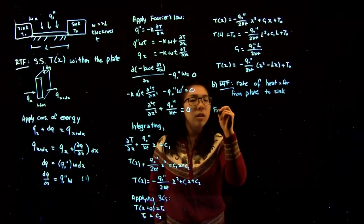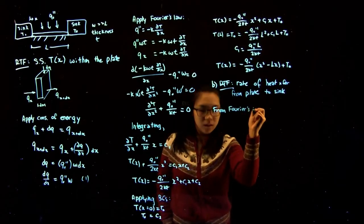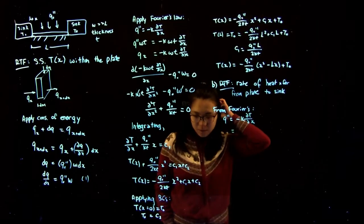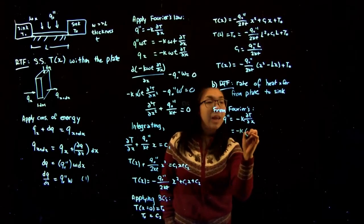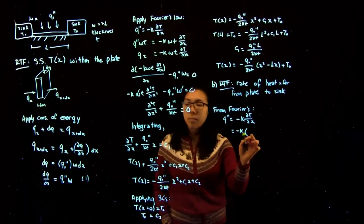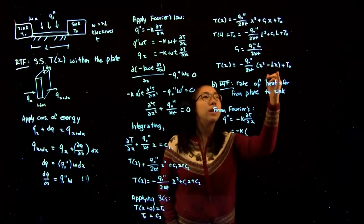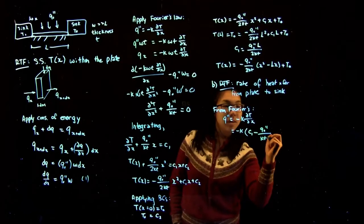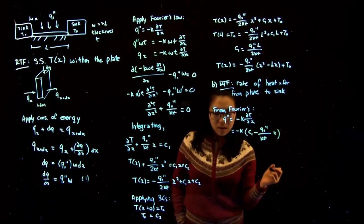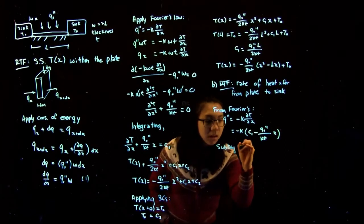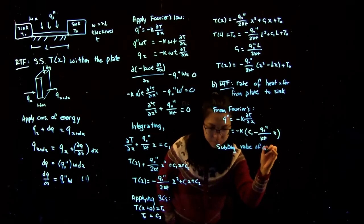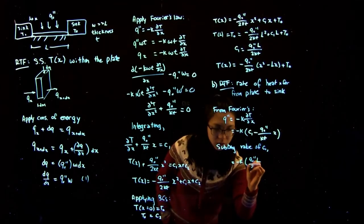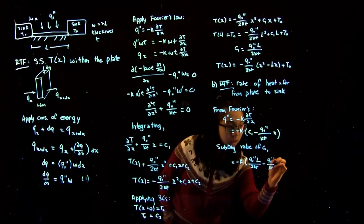We can do that from Fourier's law, which gives us flux equals minus K times dT/dx. Substituting in the expression we already have for dT/dx — which is probably the simplest thing to do instead of differentiating again — gives us minus K times (C1 minus Q0 over Kt times x). Subbing in the value of C1, that gives us minus K times (Q0L over 2Kt minus Q0 over Kt times x).